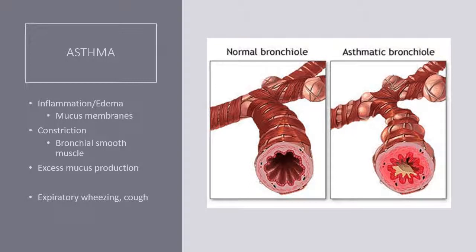Asthma is characterized by inflammation and edema of the mucus membranes with excess mucus production and constriction of the bronchial smooth muscle. This leads to expiratory wheezing, cough, shortness of breath, and activity intolerance. Treatment is centered on primary care and prevention — we want to identify and avoid triggers and provide the appropriate medication therapy for that individual. Follow-up is really important; they need to keep all their appointments, and immunizations are essential, especially pneumonia vaccines and flu shots.